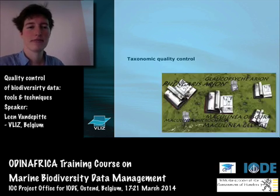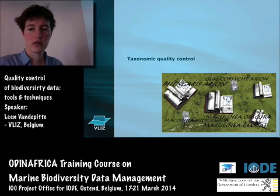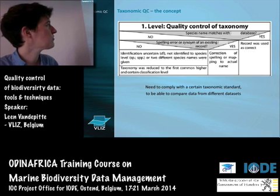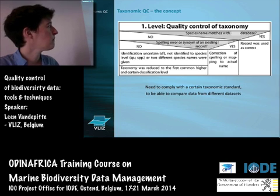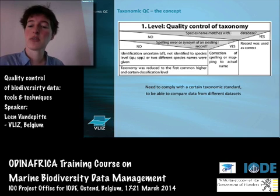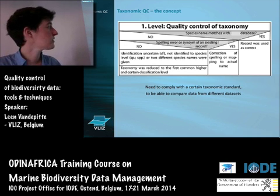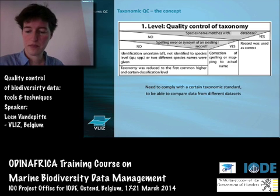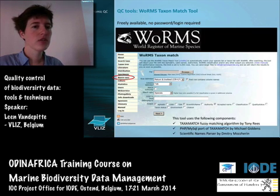I'll first focus on taxonomic quality control and then move to the other quality control steps. The concept of taxonomic quality control has already been explained in the previous presentations — it just means that you match the list you receive against a certain taxonomic standard, so that you can compare data from different datasets without running into issues.